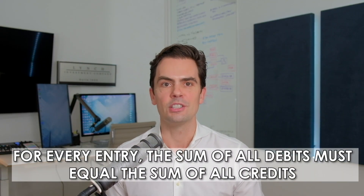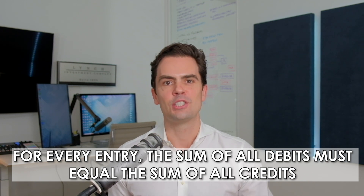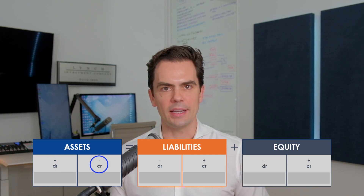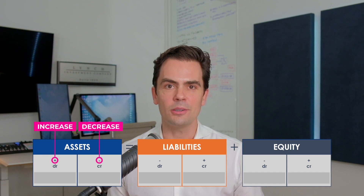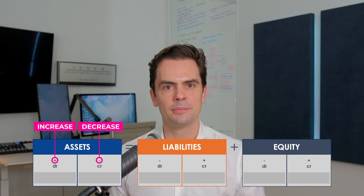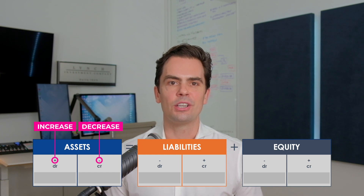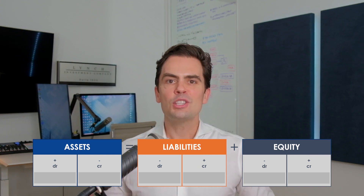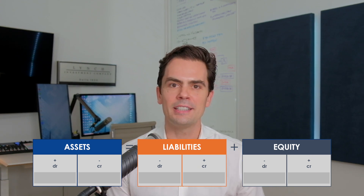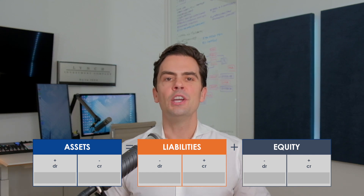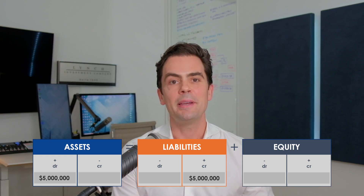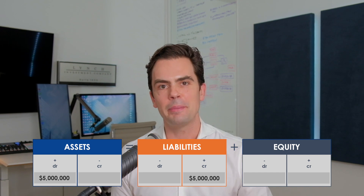Under this system, transactions are made by debits and credits, and for every entry, the sum of debits must equal the sum of credits. It's important to note that debit and credit are not defined by their everyday usage — here, debit means left and credit means right. A debit increases an account on the left-hand side of the equation, and a credit increases an account on the right-hand side. For example, if a company intends to raise $5 million by issuing debt, you would credit liabilities by $5 million to reflect the assumption of debt, then debit assets by $5 million to reflect the increase in cash on the balance sheet.